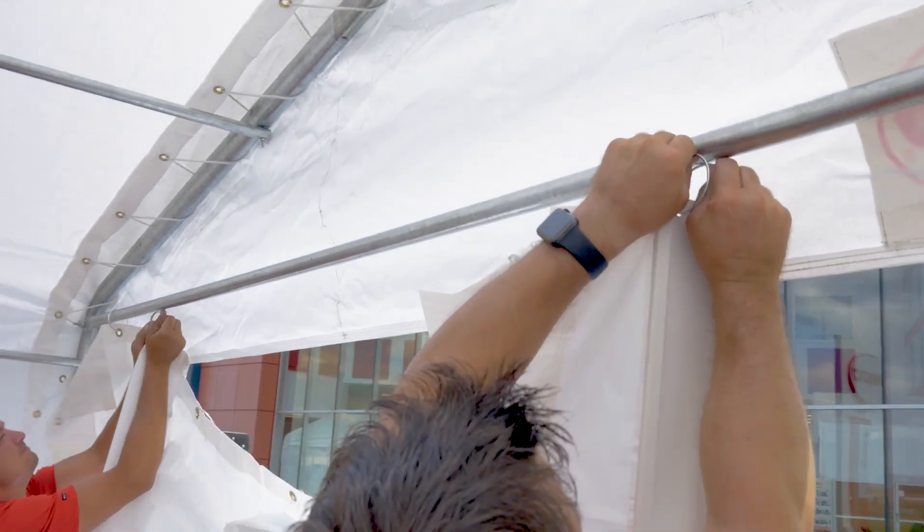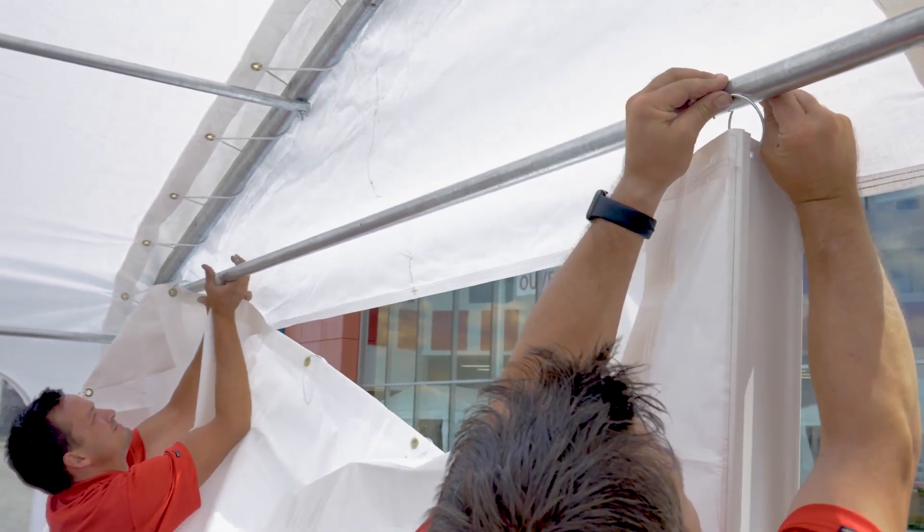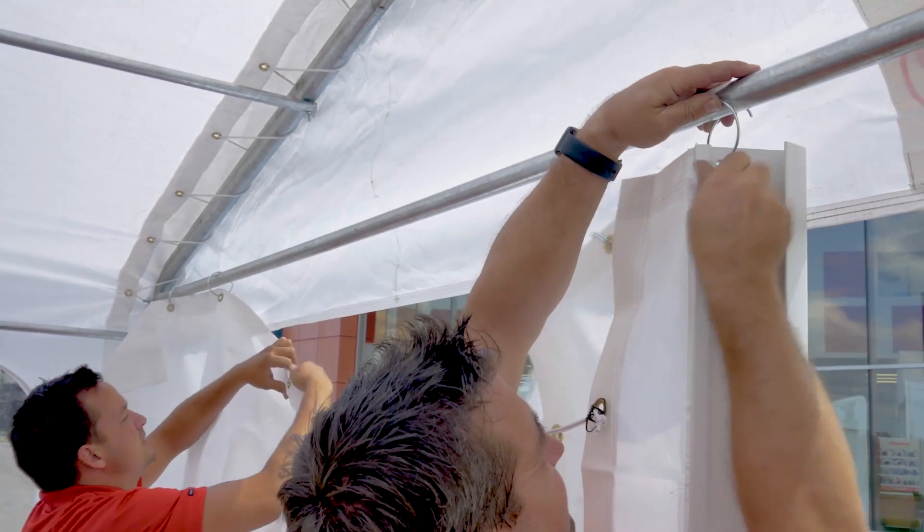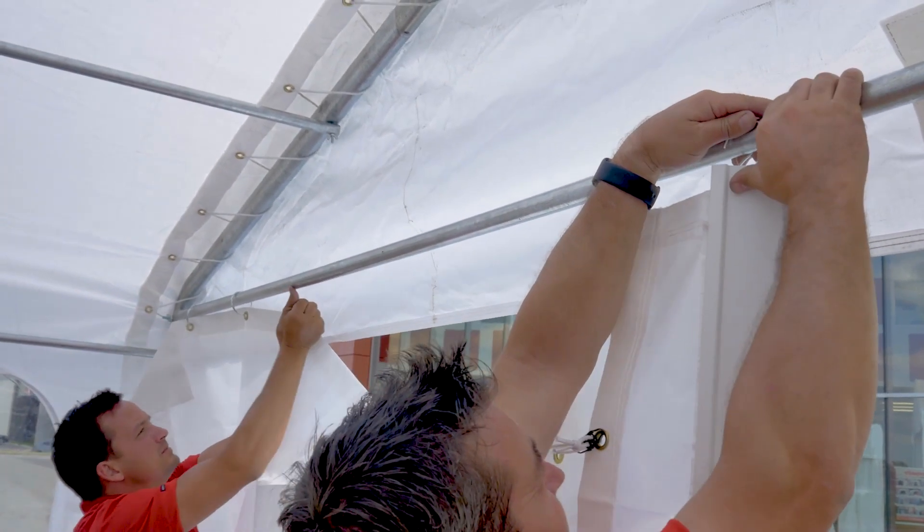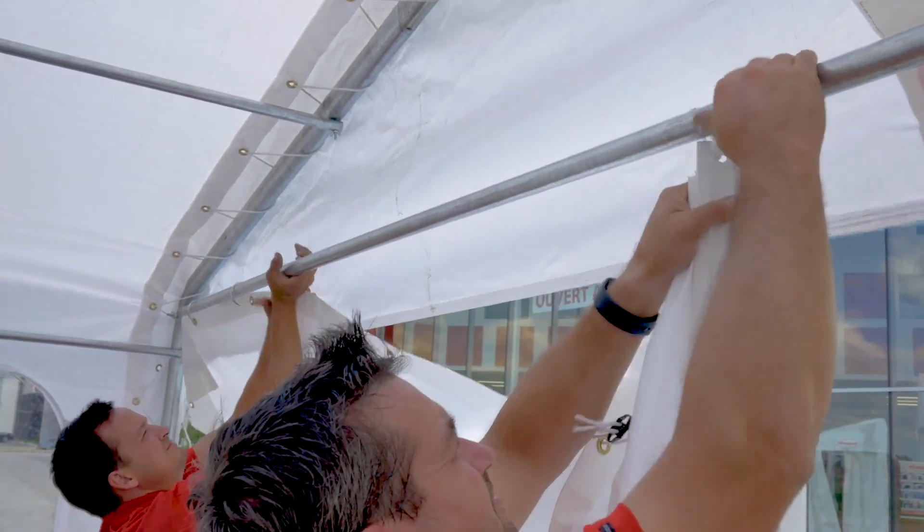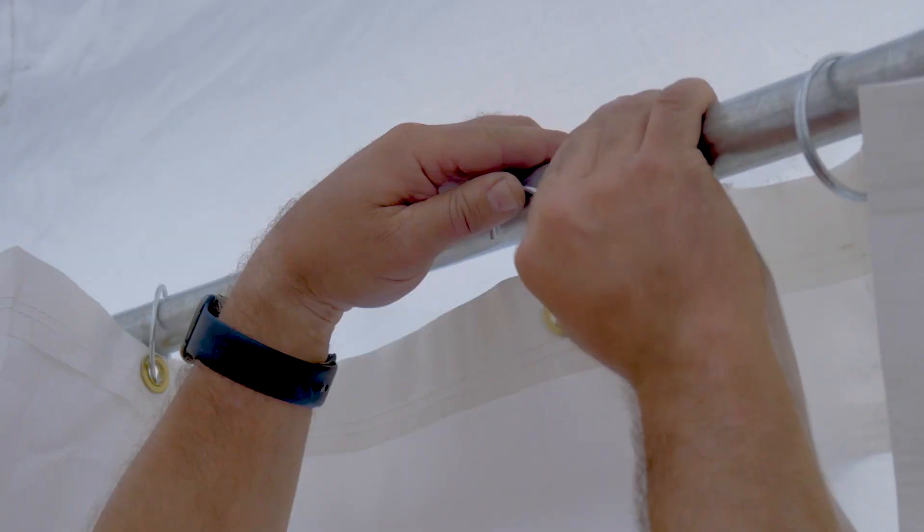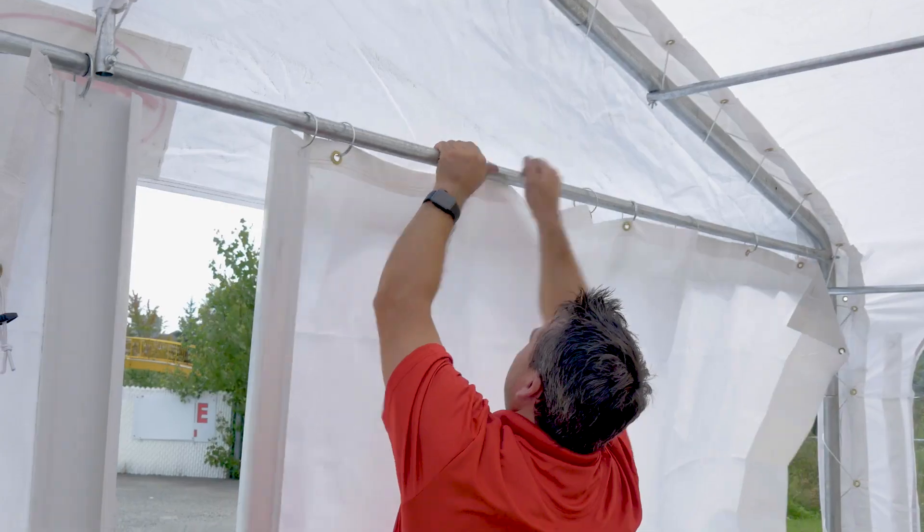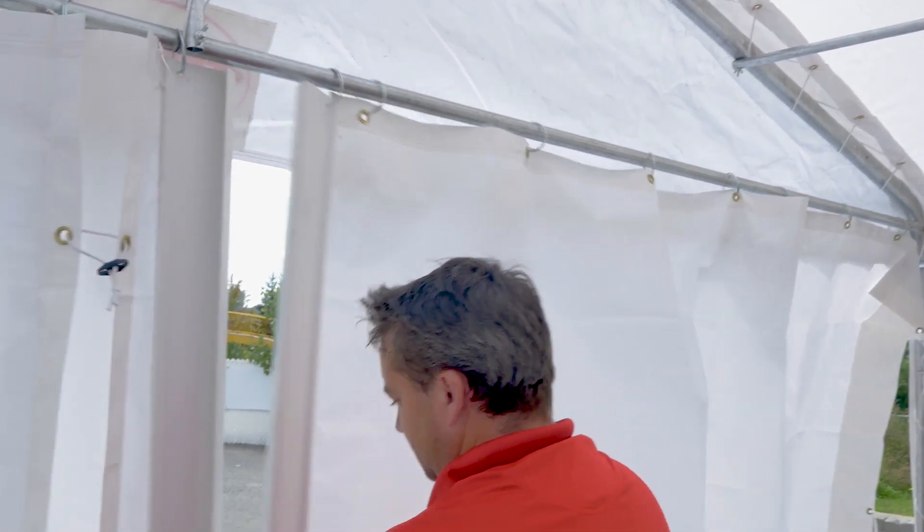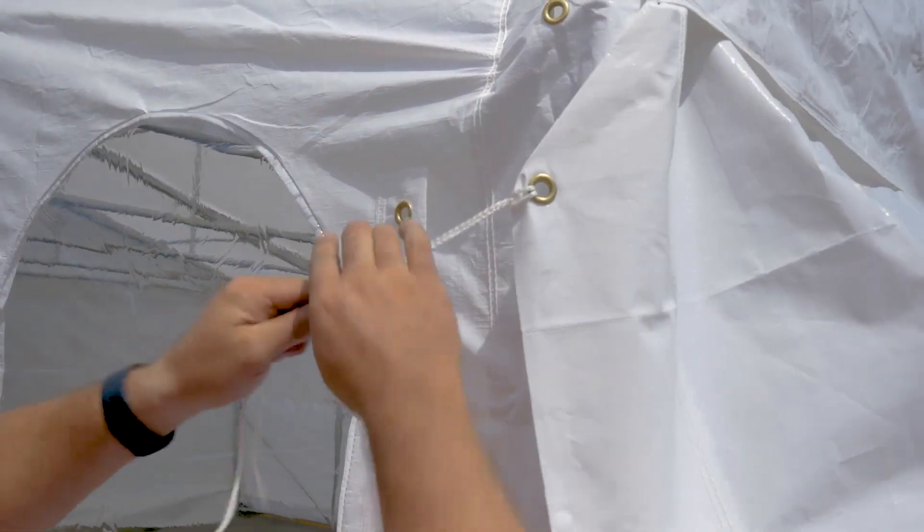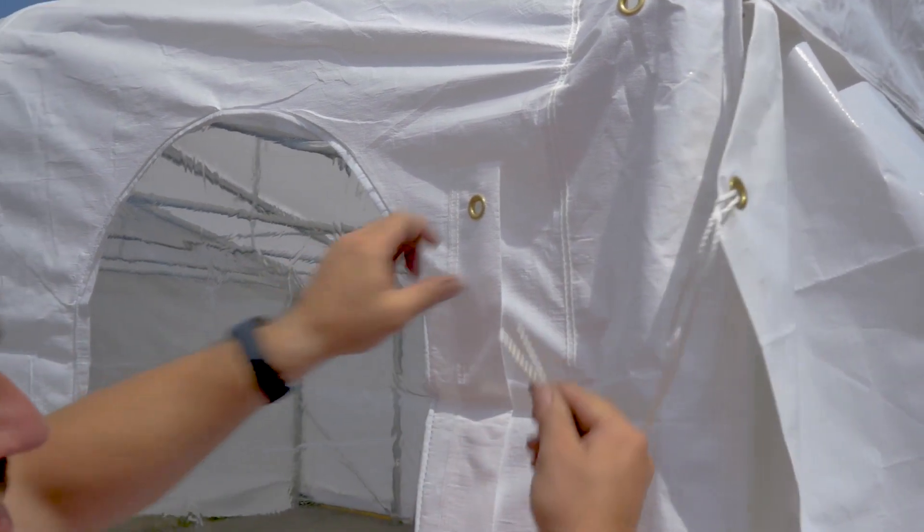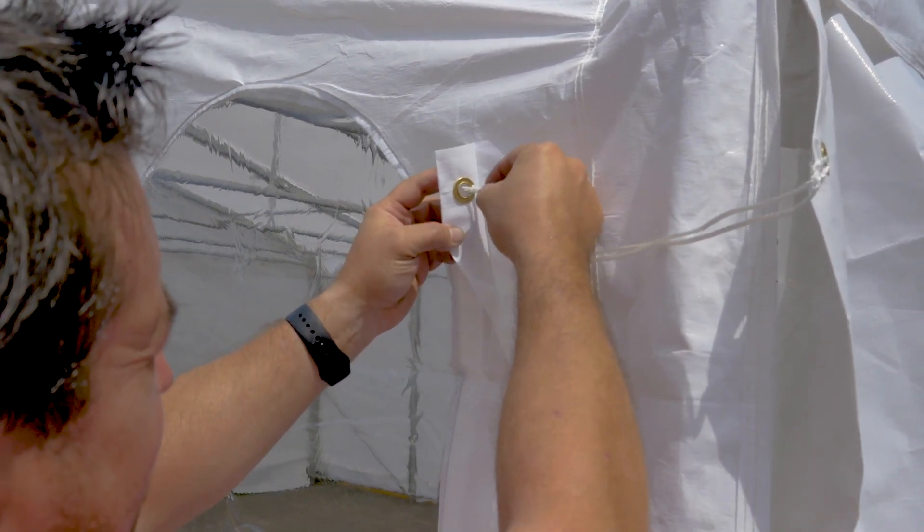Use the shower rings to hook the doors onto the door bars. You will also have to tie the doors accordingly onto the attachment flaps on each side of the shelter.